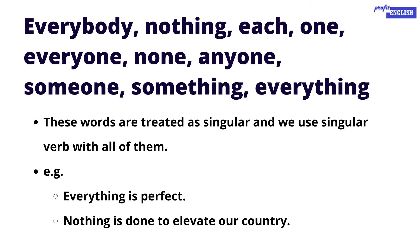Words like everything, nothing, each, one, everyone, none, anyone, someone, everybody, and something are treated as singular, and we use a singular verb with all of them. Examples: 'Everything is perfect.' 'Nothing is done to elevate our country.' 'Someone needs your help.' Notice that a singular verb is used with all of these words.